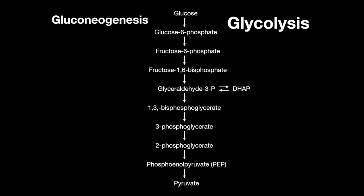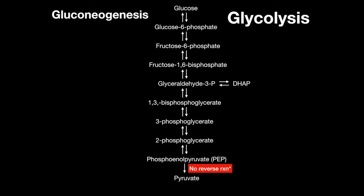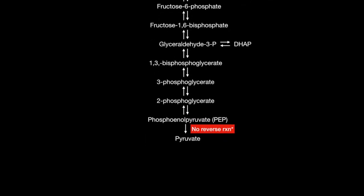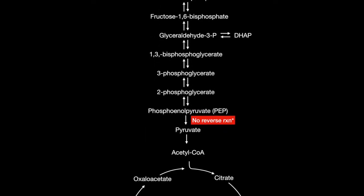Gluconeogenesis will make glucose when needed and is almost the reverse of glycolysis. However, pyruvate cannot be turned directly back into phosphoenolpyruvate and must go through the intermediate oxaloacetate, which can then become phosphoenolpyruvate.